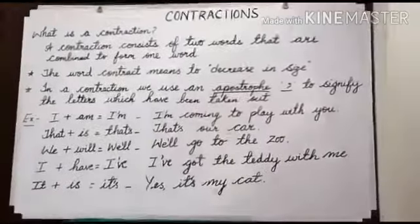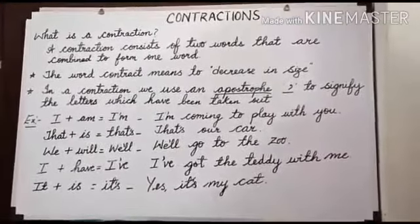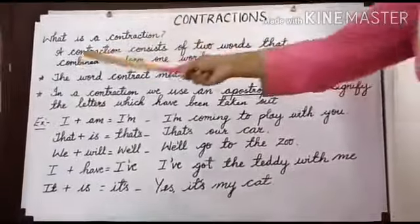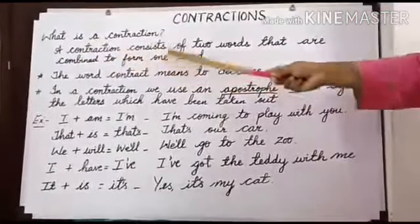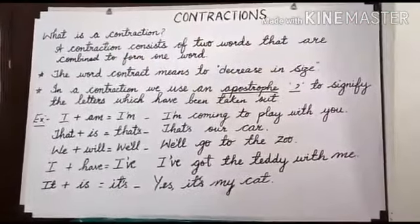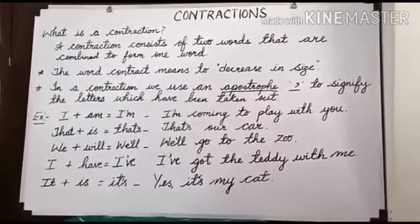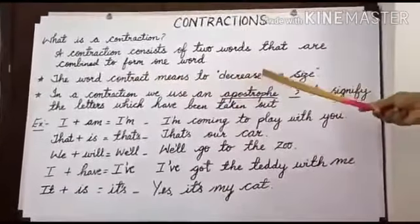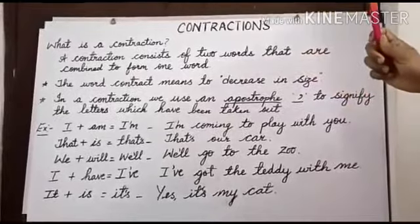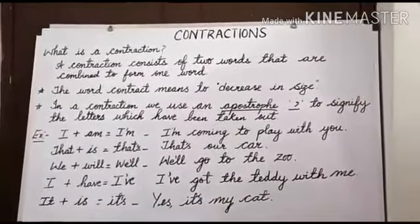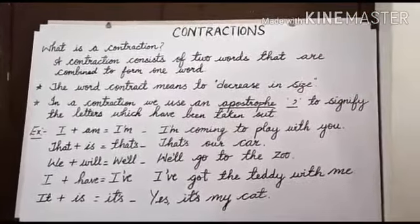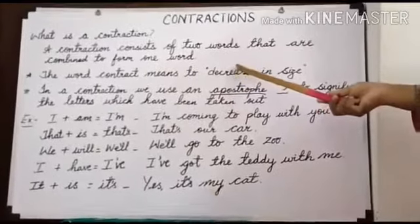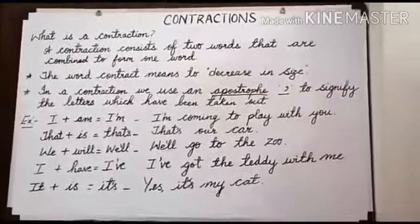First, let us know what contractions are. A contraction consists of two words that are combined to form one word, or we can say it is a short way of writing two words together. The word 'contract' means to decrease in size, or it is a shortened form of writing. When we write contractions, we are decreasing the word in size. Why do we write contractions?